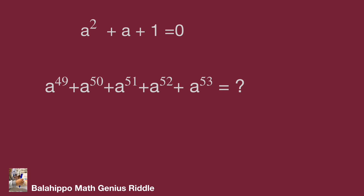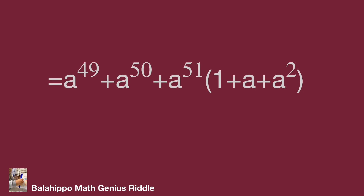Notice that in a squared plus a plus 1, the powers differ by 1. Similarly, for a power of 51 plus a power of 52 plus a power of 53, the powers also differ by 1 — matching the same pattern. So we adjust the last three terms: a power of 51 plus a power of 52 plus a power of 53 becomes a power of 51 multiplied by the quantity 1 plus a plus a squared. Substitute a squared plus a plus 1 by zero.